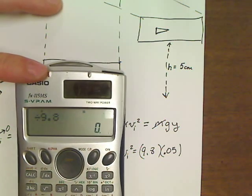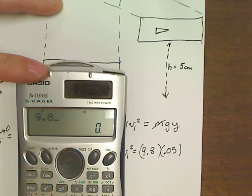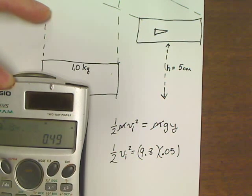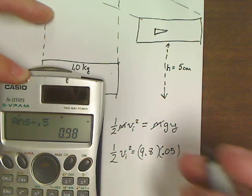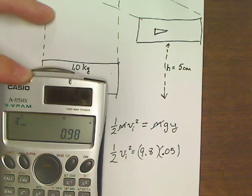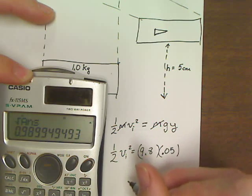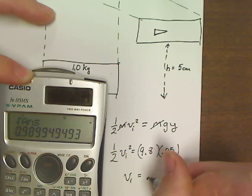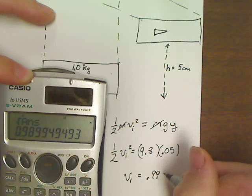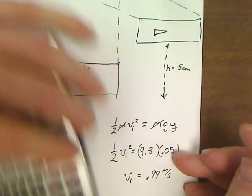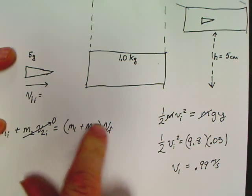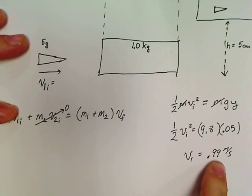So 9.8, we've got a little random divide sign. 9.8 times 0.05. And then let's see what we've got here. Divide both sides by half. Oh, square root. And we've got velocity initial equals to 0.99, basically 1 meter per second.